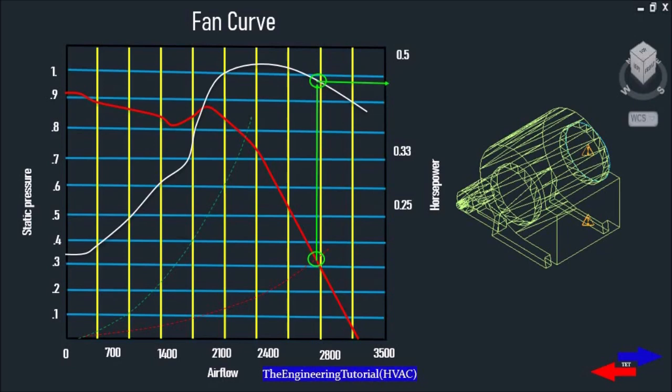Fan curves always slope from upper left down to lower right. The green circle is the intersection of the fan curve which shows the performance of the fan. If you look at the fan curve here, the solid red line is the fan curve that is showing the CFM versus the static pressure.